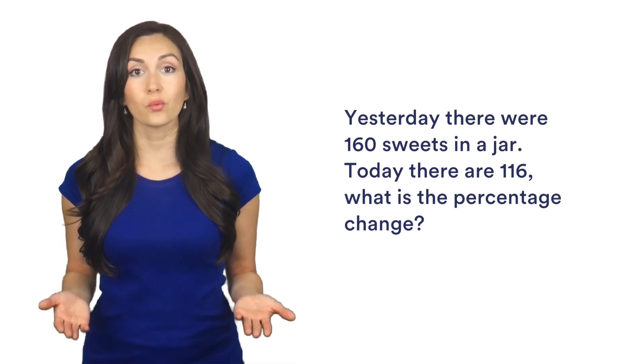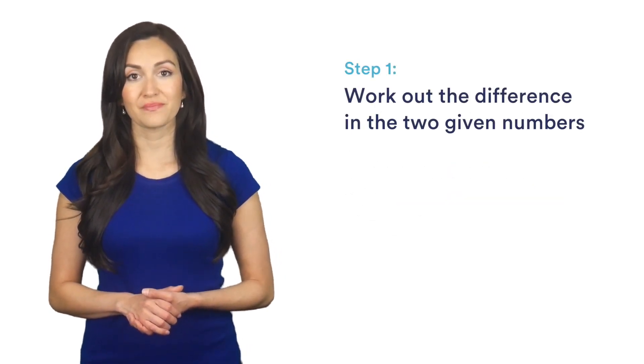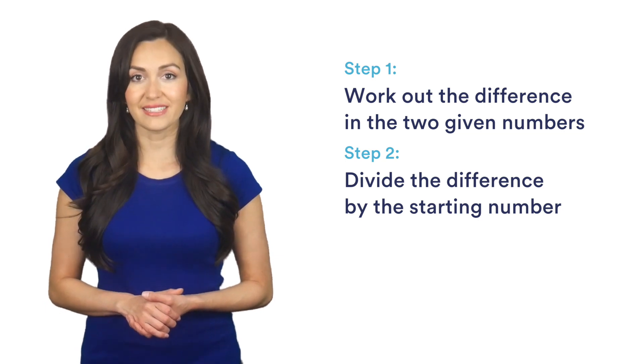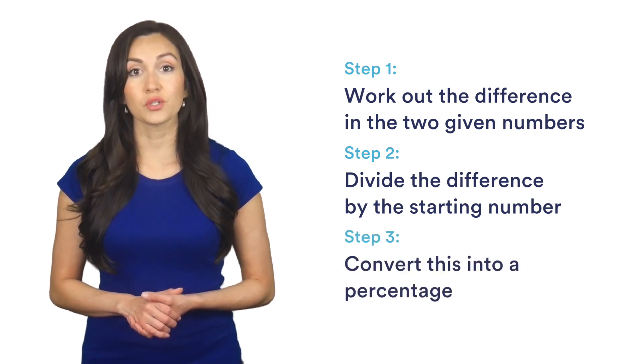To work this out, we break it down into three steps. Step 1, work out the difference in the two given numbers. Step 2, divide the difference by the starting number. Step 3, convert this into a percentage.